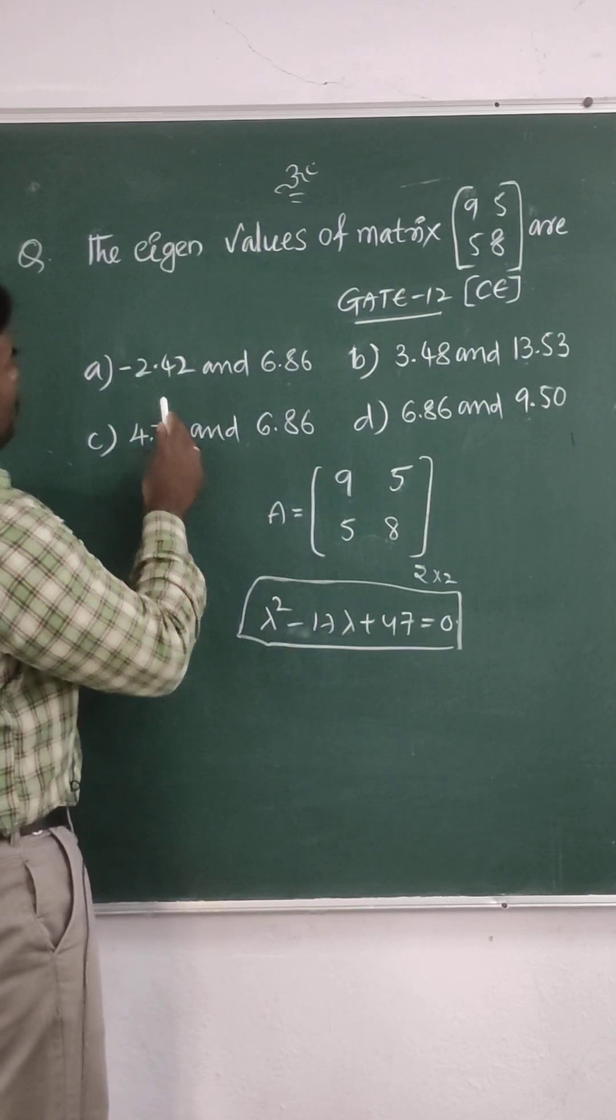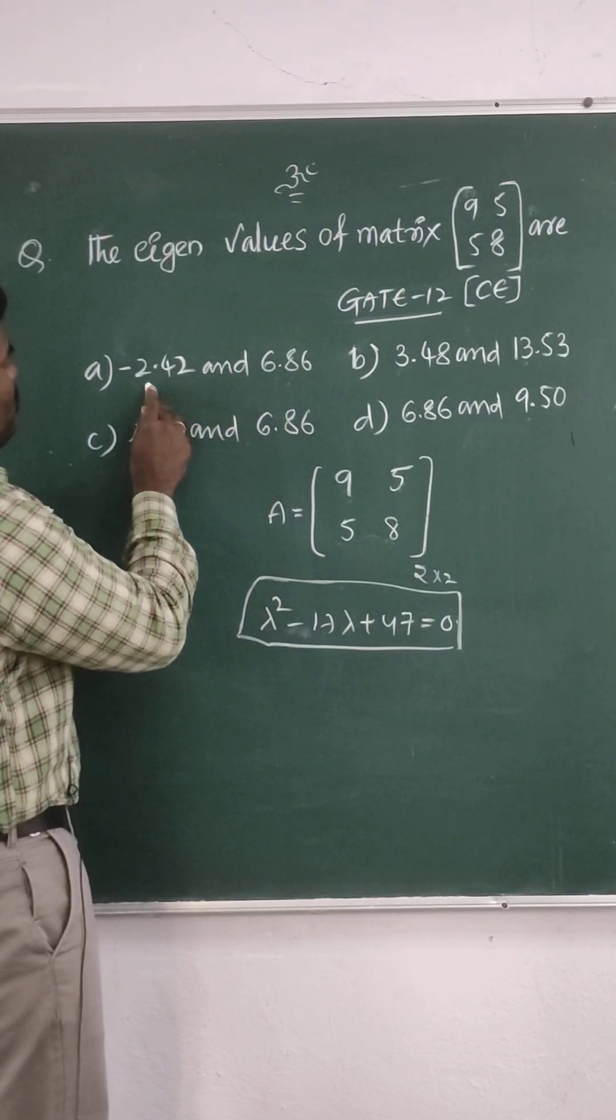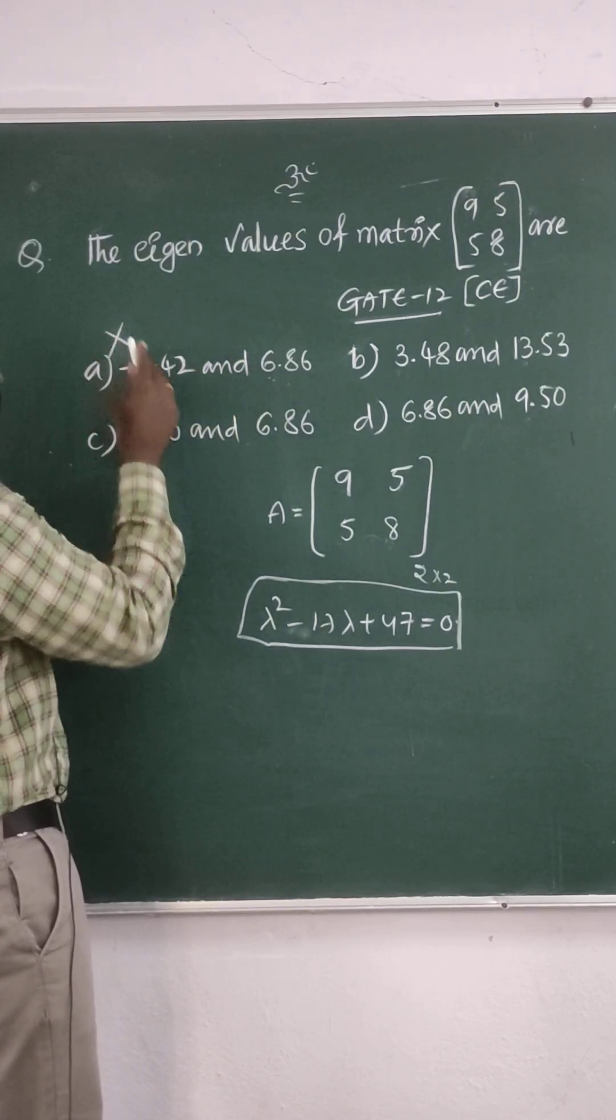Sum of the eigenvalues should be trace of A, so 17. Are we getting 17? No, 6 minus 2 - this is not equal to 17.